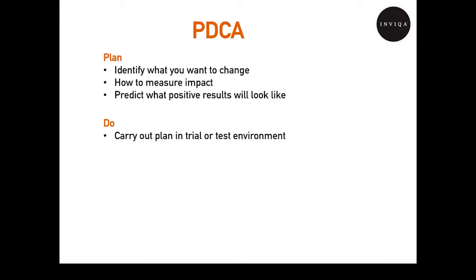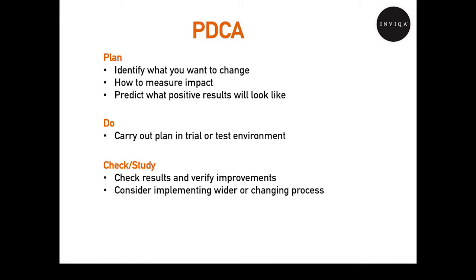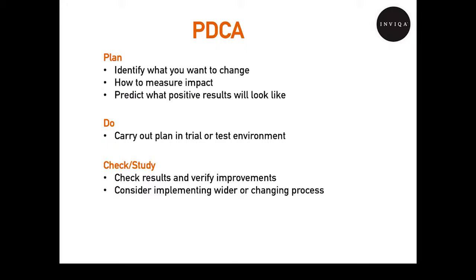You do: carry out that plan in a trial or test environment on a small scale under controlled conditions. This would ideally use continuous delivery, deploying change into a realistic context. Check or study: examine the results and verify that you have improved the process. If you have, consider implementing on a broader scale. If you haven't, improve the process and go back and try again. And then you act: implement the change you have verified on a broader scale.